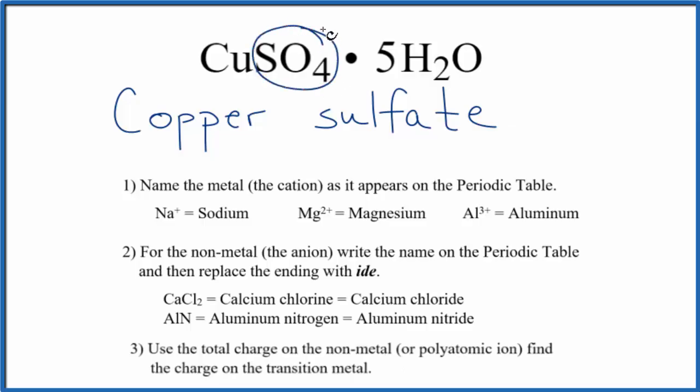The sulfate ion is always 2 minus the whole thing. This is a good one to remember. So the copper has to be 2 plus. Since we have the transition metal, we write a Roman numeral 2. We put it in parentheses. So this first part is copper 2 sulfate.